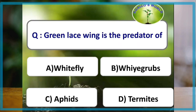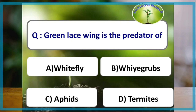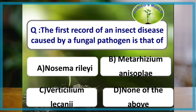Green lacewing is a predator of which of the following pests? The answer is aphids. The first record of an insect disease caused by a fungal pathogen is that of Metarhizium anisopliae.